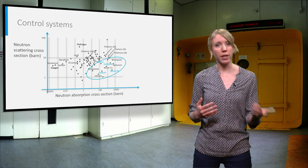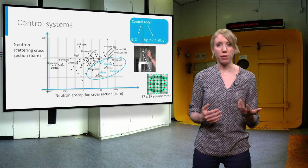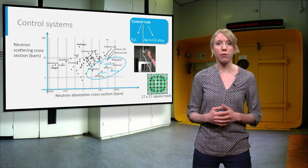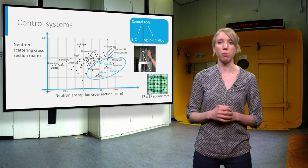There are different ways to control the chain reaction. The first method is to use control rods that are inserted from the bottom or the top of the core within the fuel assembly.